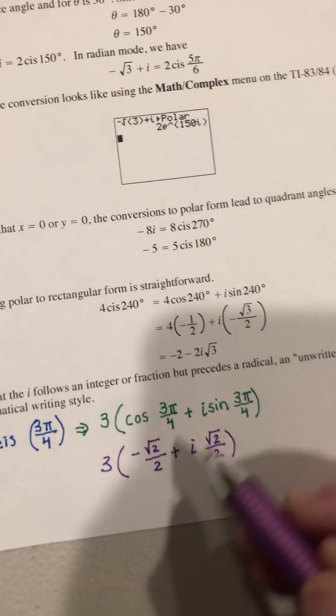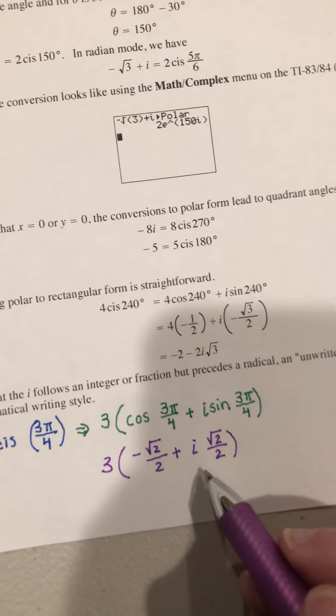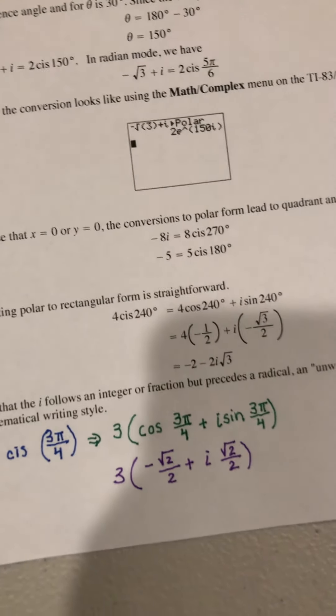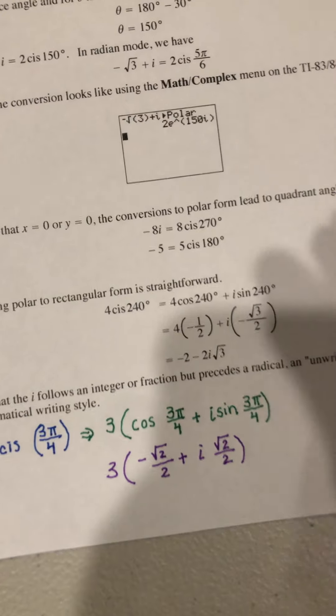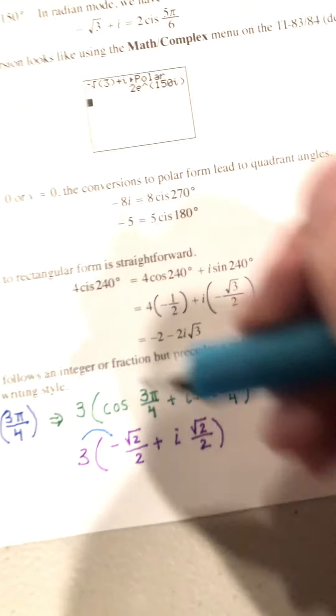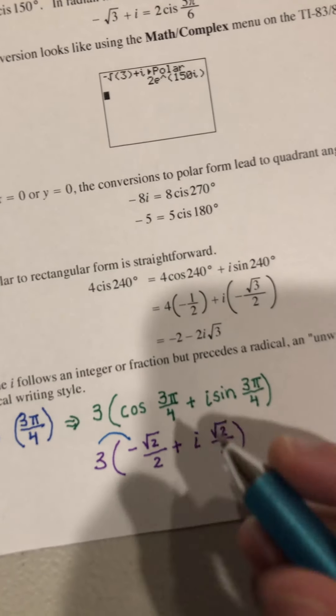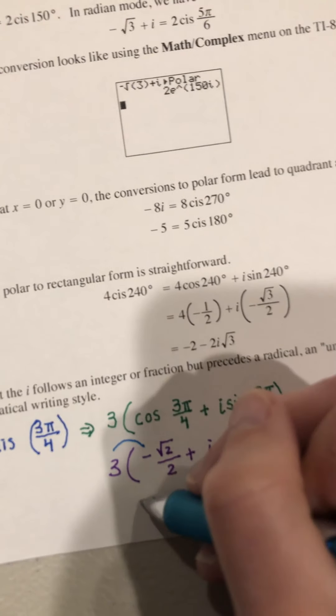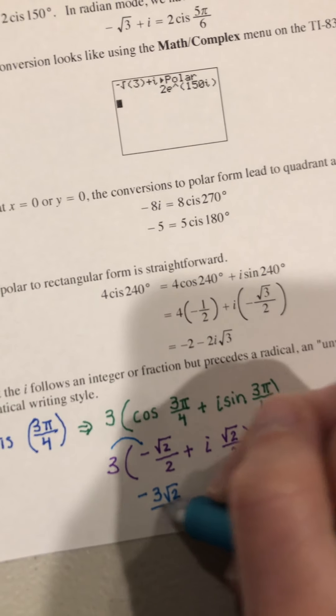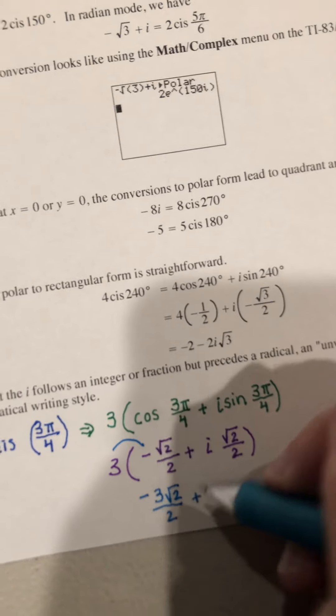After you do that, you can multiply them both by 3. So it's kind of like distributing the 3 here. You have negative 3 square root 2 over 2 plus,